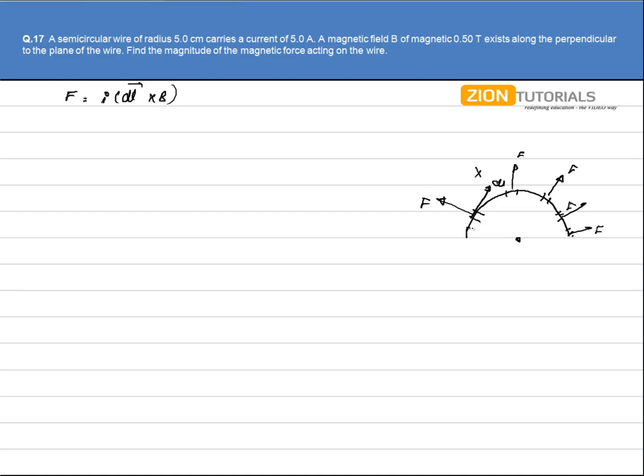And one thing I'm telling you that the vector addition of all these forces, because all these forces are in totally different directions, so calculating the net force will be really a complication. So what I can do is I will take a direct length that is from initial point A to final point B.